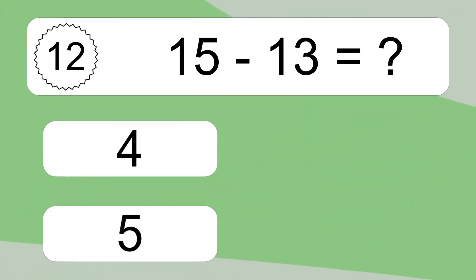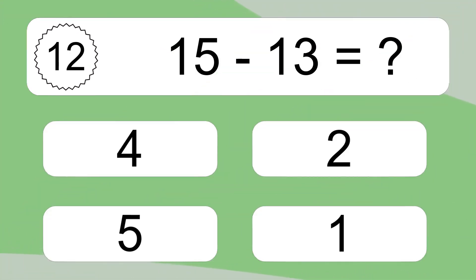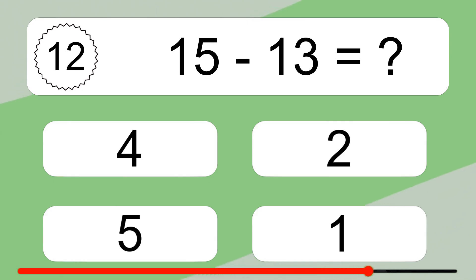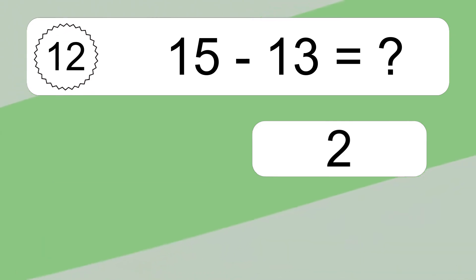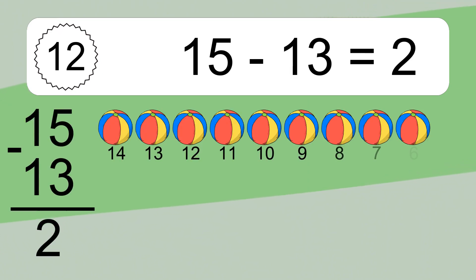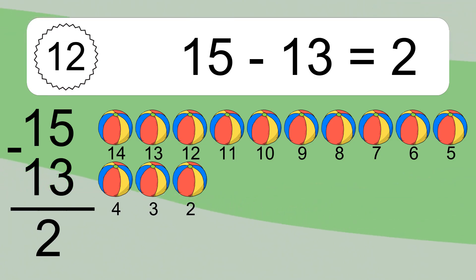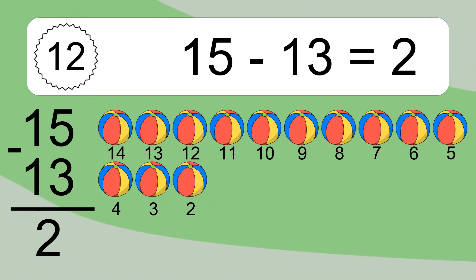15 minus 13 equals what? 15 minus 13 equals 2. Let's count it: 14, 13, 12, 11, 10, 9, 8, 7, 6, 5, 4, 3, 2.